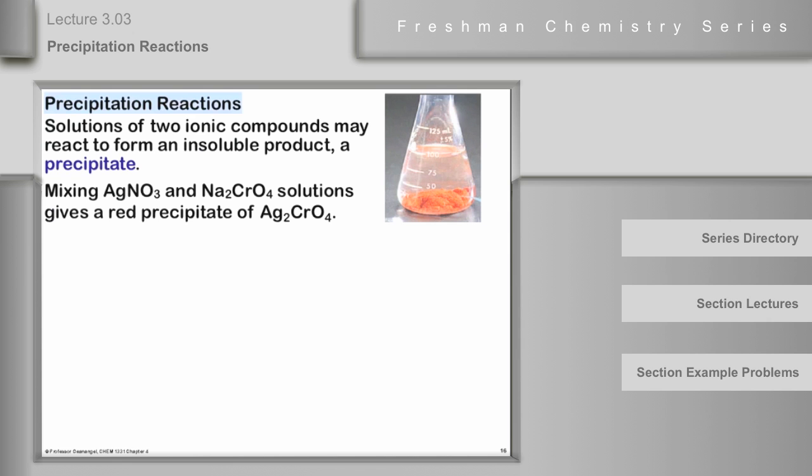So, the rule is that a reaction occurs when ions are removed from solution. Remember? Got to be removed from solution. This could be by the formation of a precipitate. One way this could happen, and that's where we're going to go today, first, to look at the formation of precipitates.